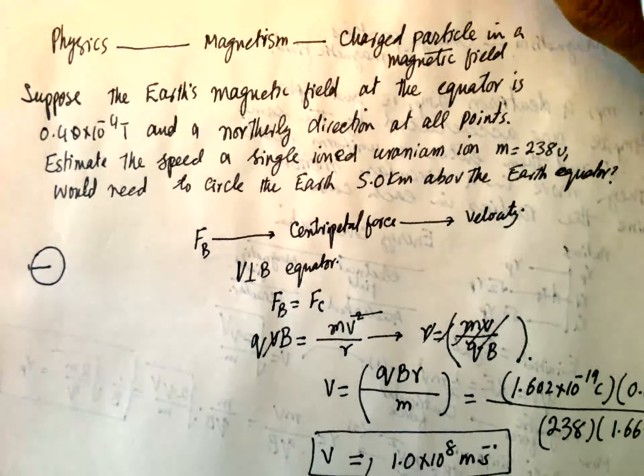This is equal to 1.7 into 10 power 8. So FB is much much greater than gravity. In this case, this is the answer. This is the question, and this is the answer.